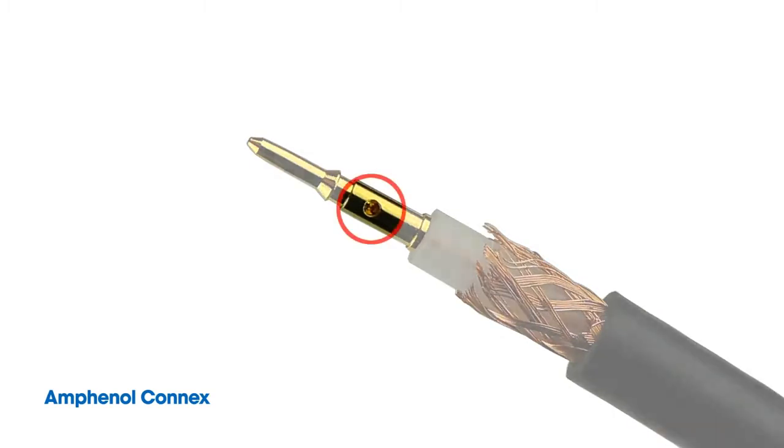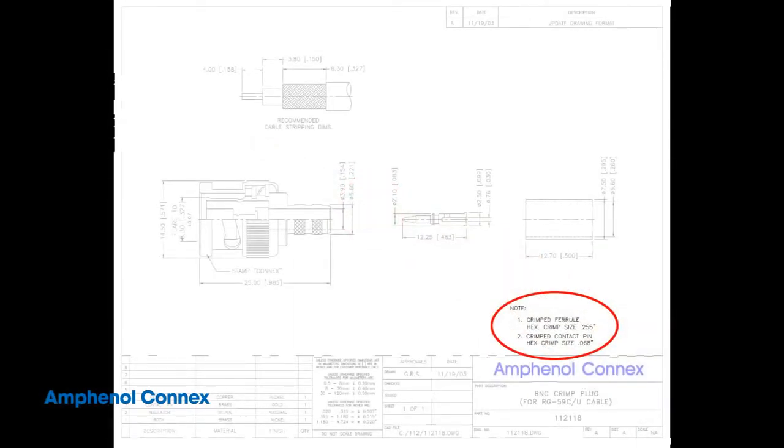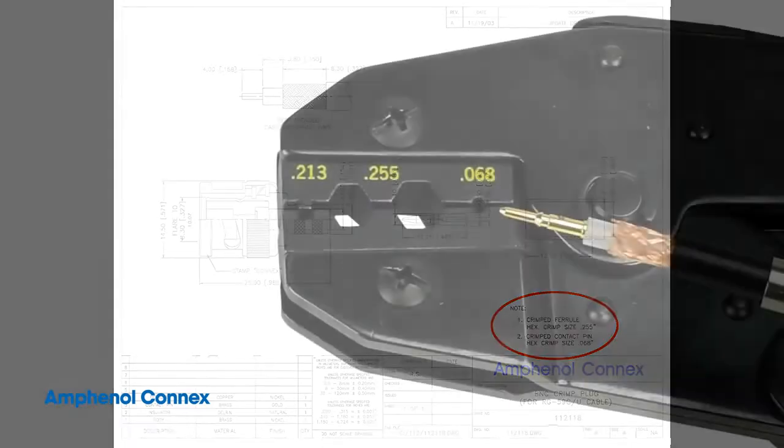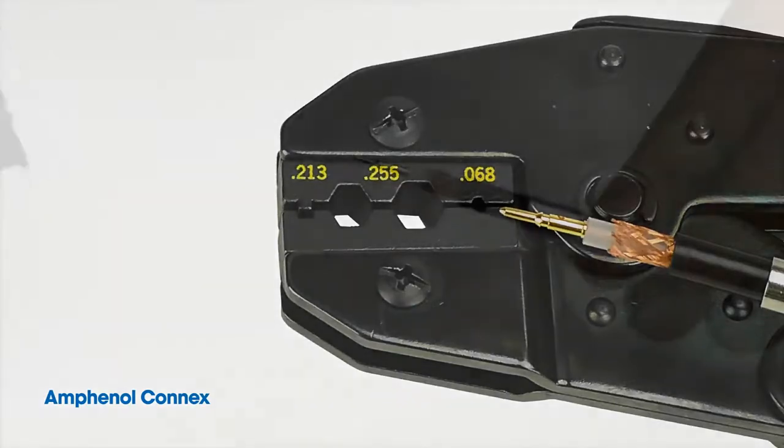It should look like this. Note the inspection hole through which you should be able to see the fully inserted center conductor of the cable. Now, locate the crimp instructions on your connector drawing and note that the contact pin requires a 0.068 inch crimp. Next, take your crimp tool and locate the 0.068 cavity. Now you are ready to crimp the pin.